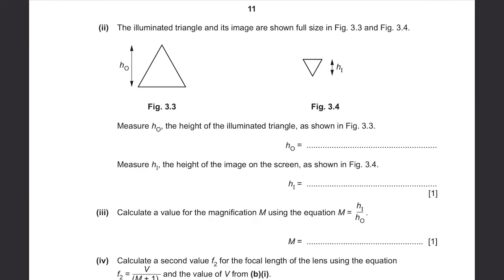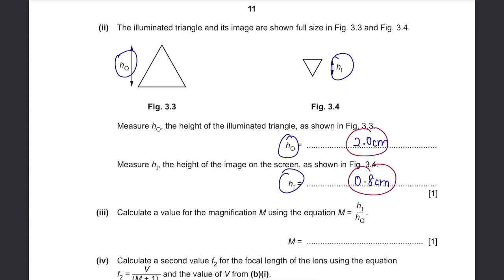The illuminated triangle and its image are shown full size in figures 3.3 and 3.4. Measure HO, the height of the illuminated triangle from figure 3.3 — it's 2.0cm. Measure HI, the height of the image from figure 3.4 — it's 0.8cm. There's no range for these; you must get exactly 2.0 and 0.8. Calculate magnification M using M equals HI over HO: 0.8 divided by 2.0 equals 0.4. There is no unit since cm cancels.